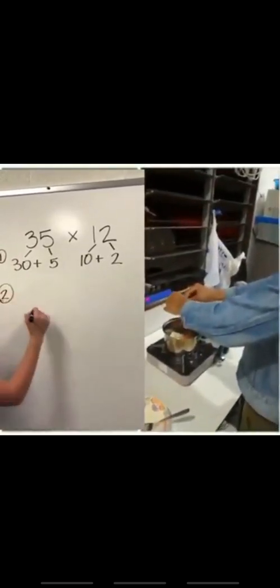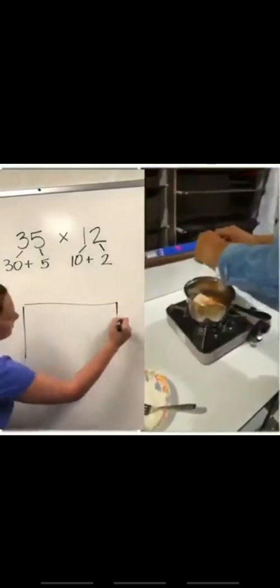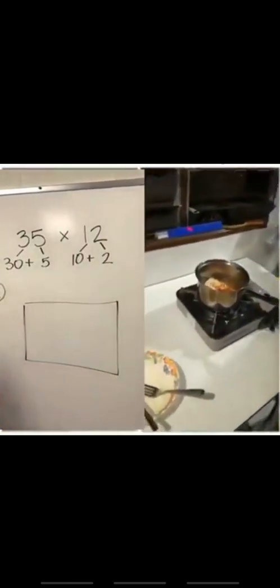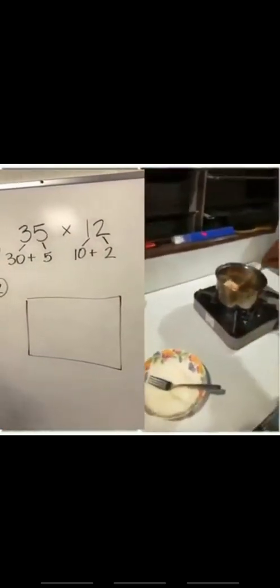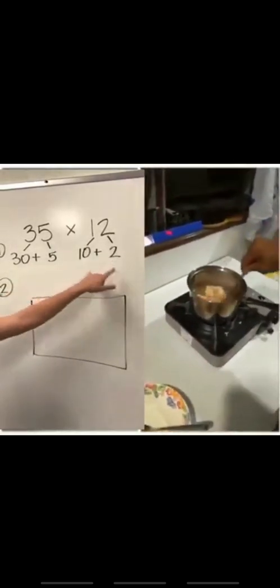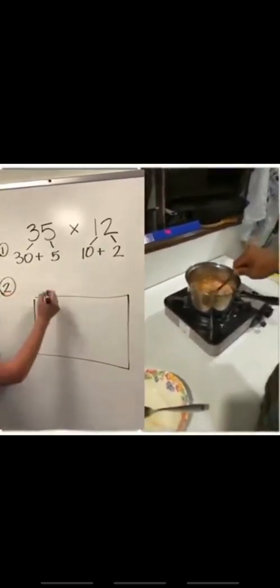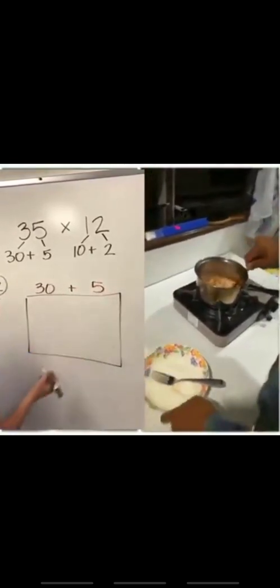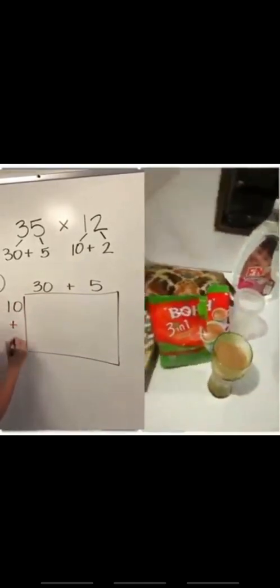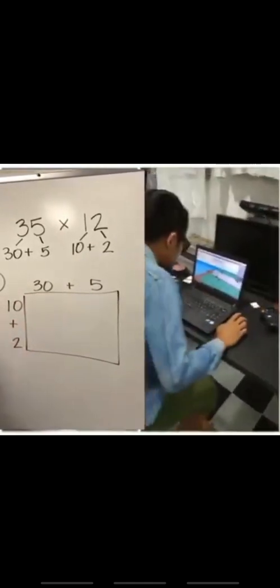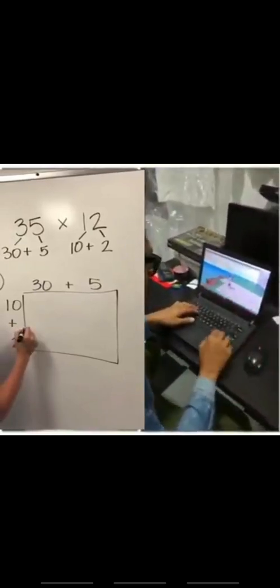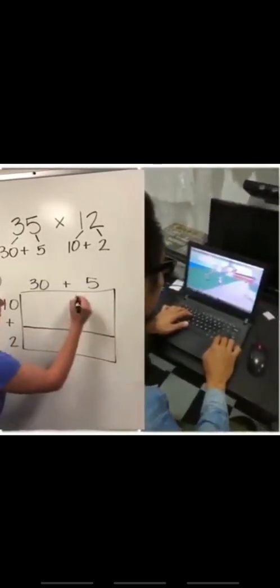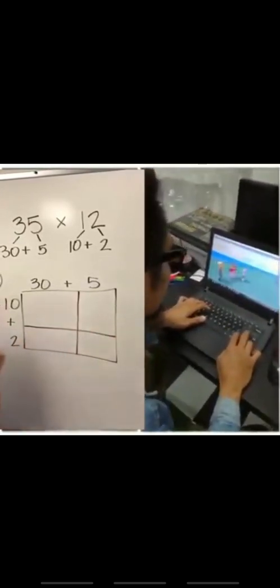The next step would be to draw a large box. Okay, and on this box we're going to put both of our expanded numbers. So on the top I'm going to put 30 plus 5, and on the side I'm going to put 10 plus 2. Where your plus signs are, I want you to draw lines through the middle and down it.